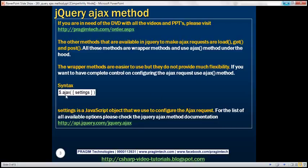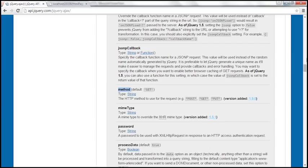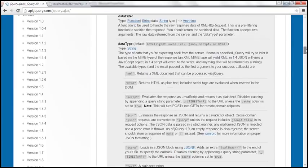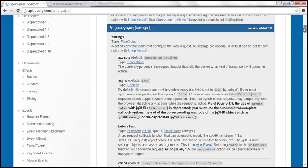Here is the syntax of the Ajax method. We pass a single JavaScript object, and this object is going to contain all the options that define the behavior of the Ajax request. If you want to know the complete list of options available, then visit the jQuery documentation URL. On this page, we have all the options available that we can use with the jQuery Ajax function.